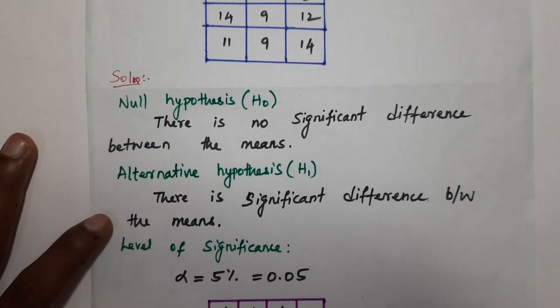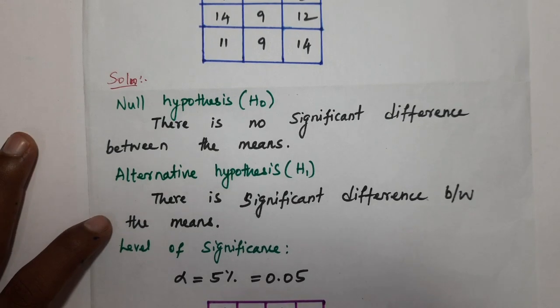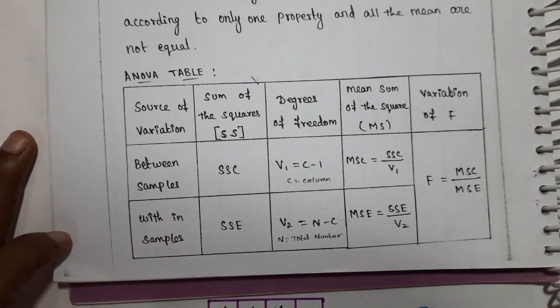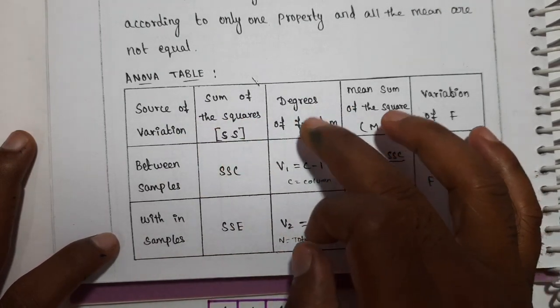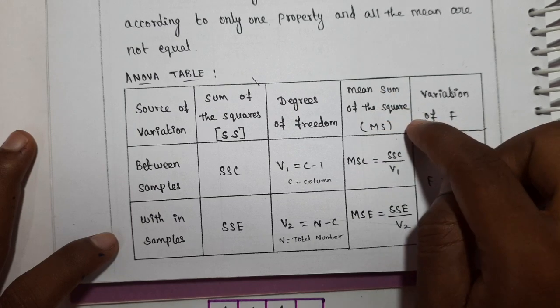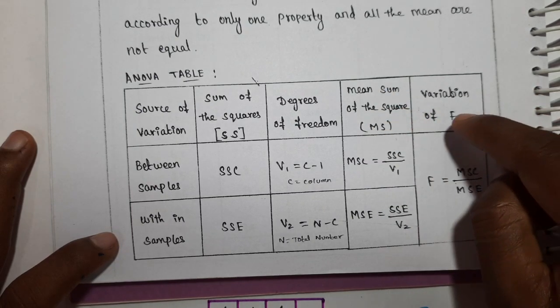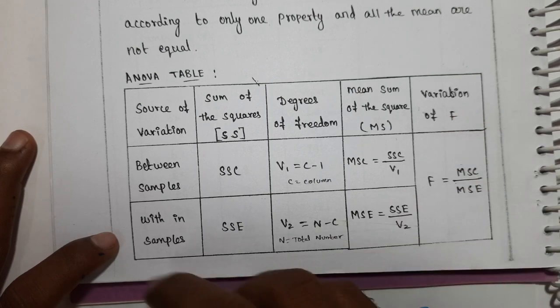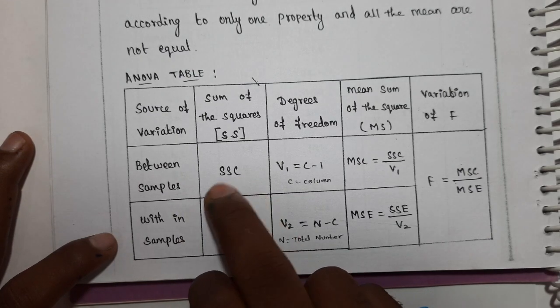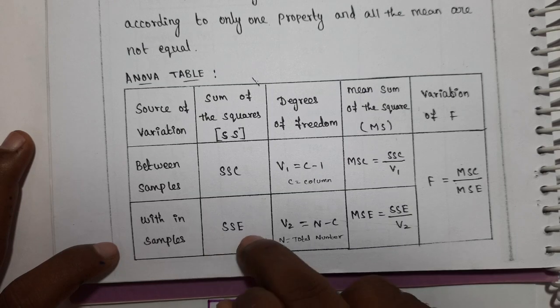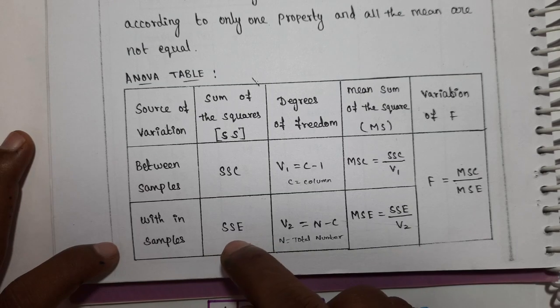The level of significance is five percent, i.e., 0.05. Now we set up the ANOVA table with the following columns: source of variance, sum of squares, degrees of freedom, mean sum of squares, and F-ratio. For one-way classification, we have SSC (sum of squares of columns) and SSE (sum of squares of errors).